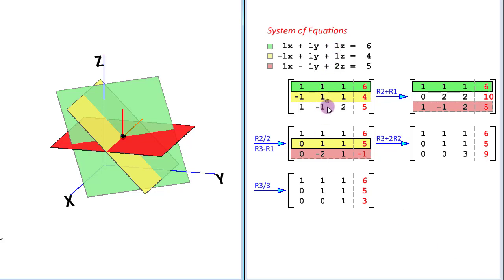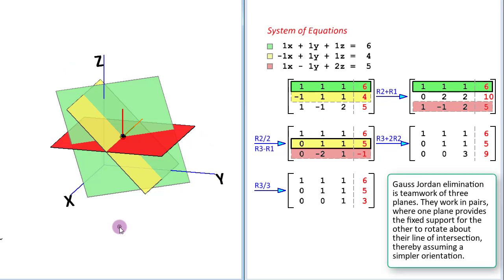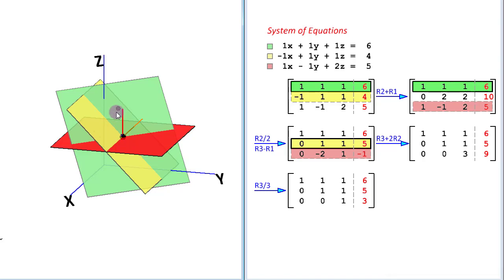Here the 3 equations or these 3 rows or these 3 planes are in a beautiful process of cooperation. They are all working together, a pair at a time and in that pair, one plane remains fixed and it provides the support, it provides the pivot or axis of rotation to the other plane and the other plane rotates to a simpler orientation. For example, here this plane has assumed the orientation parallel to the x and y axis thereby intersecting only the z axis and giving us the z coordinate of our solution. We will be doing the same with the remaining 2 planes now.